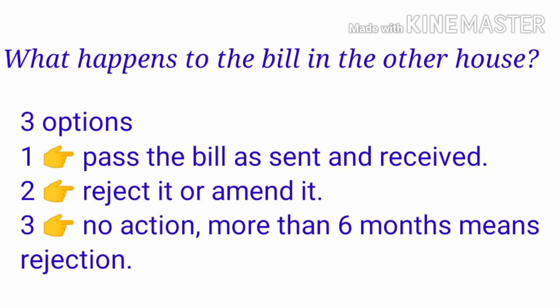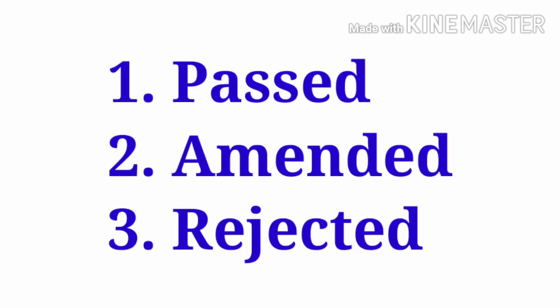First, it may finally pass the bill as sent by the originating House. Second, it may reject the bill altogether or amend it and return it to the originating House. Third, it may not take any action on the bill — and if more than six months pass after the date of receipt, the bill is considered rejected. So three things may happen: the bill may be passed, amended, or altogether rejected.